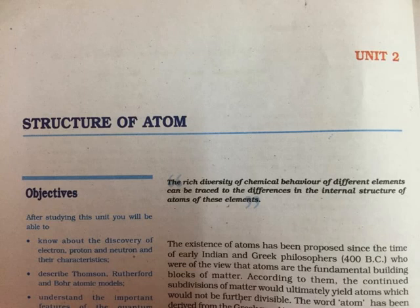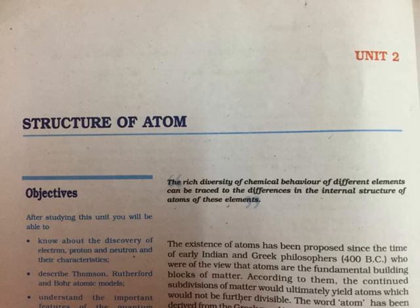Dual Behavior of Electromagnetic Radiation. The particle nature of light posed a dilemma for scientists. On the one hand, it could explain the photoelectric effect, but it was not consistent with the known wave behavior of light, which could account for the phenomena of interference and diffraction. The only way to resolve the dilemma was to accept the idea that light possesses both particle and wave-like properties, i.e., light has dual behavior. Depending on the experiment, we find that light behaves either as a wave or as a stream of particles. Whenever radiation interacts with matter, it displays particle-like properties, in contrast to the wave-like properties which it exhibits when it propagates. This concept was totally alien to the way scientists thought about matter and radiation, and it took them a long time to become convinced of its validity. As you shall see later, some microscopic particles like electrons also exhibit this wave-particle duality.